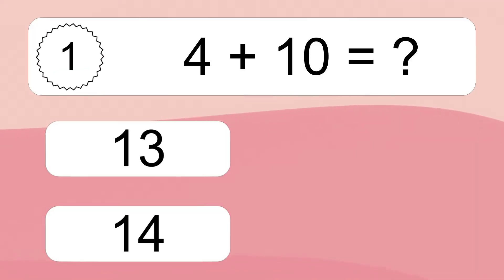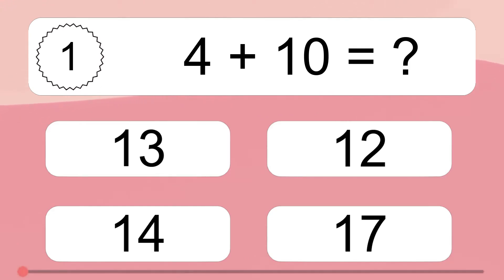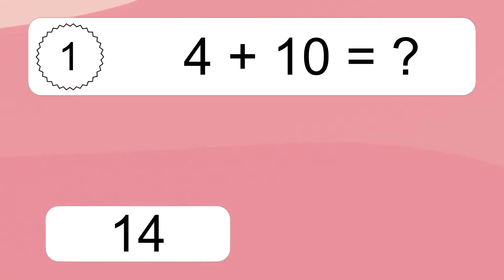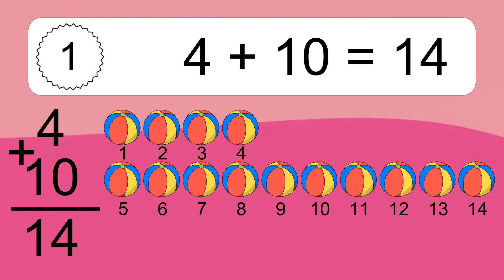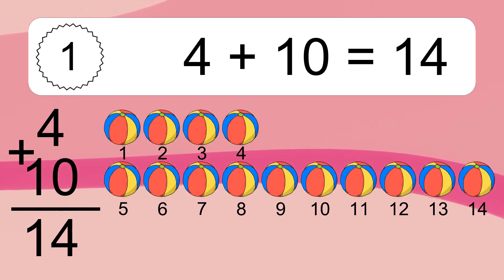4 plus 10 equals what? 4 plus 10 equals 14. Let's count it: 1, 2, 3, 4, 5, 6, 7, 8, 9, 10, 11, 12, 13, 14.